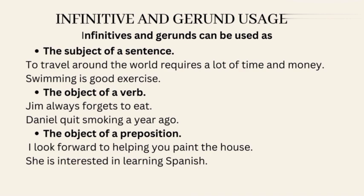Infinitives and gerunds can be used as the subject of a sentence — for example, 'To travel around the world requires a lot of time and money' and 'Swimming is good exercise.' As the object of a verb — for example, 'Jim always forgets to eat' and 'Daniel quit smoking a year ago.' As the object of a preposition — for example, 'I look forward to helping you paint the house' and 'She is interested in learning Spanish.'